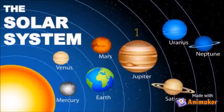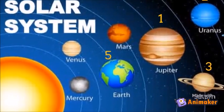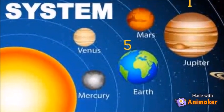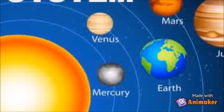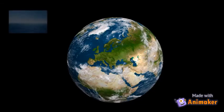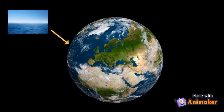Earth is the fifth largest planet in the solar system. It is the third planet in orbit around the sun. Most of Earth is covered by oceans.